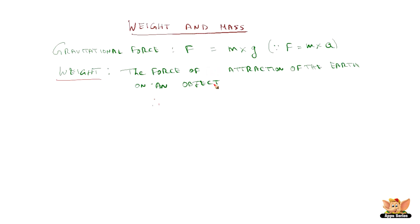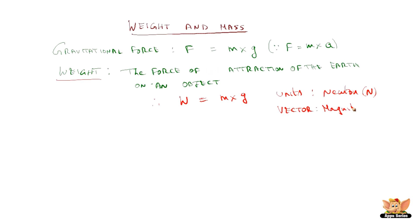From F = ma, the weight is nothing but W = mg, where W is represented in Newtons (N). Weight is a vector quantity because it depends on acceleration due to gravity, which has both magnitude and direction. It acts vertically downwards, since both acceleration due to gravity and the force of attraction from the Earth on the object act vertically downwards.